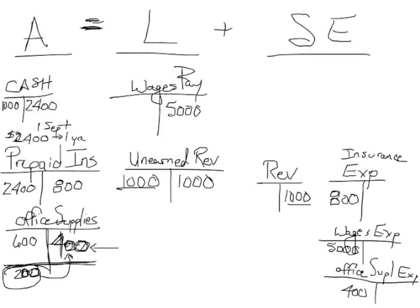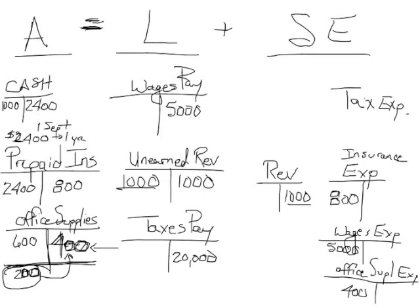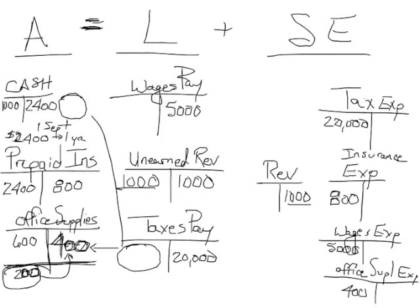Nobody pays their taxes on December 31st, but that's when you look at what you owe. So you say: I owe $20,000 in taxes payable. Even though you haven't paid it yet, you get to expense it — it's a cost of doing business for that tax year. You debit tax expense $20,000 and credit taxes payable $20,000. The next year when you actually pay the cash, you debit taxes payable and credit cash — the liability goes away and your cash goes away. But you expense it at the end of the year.